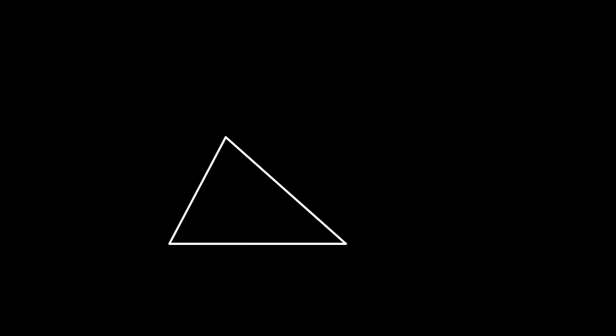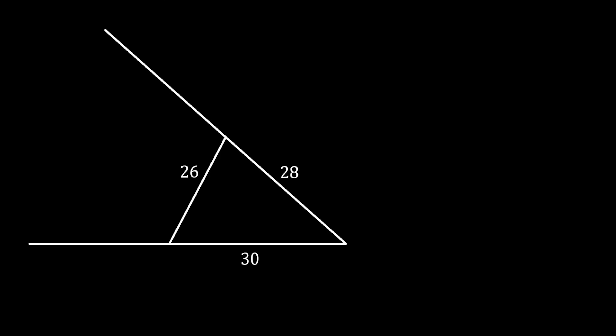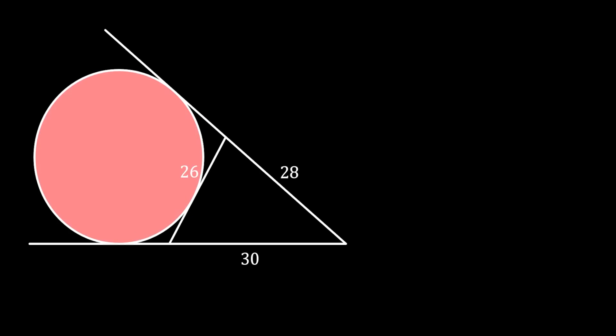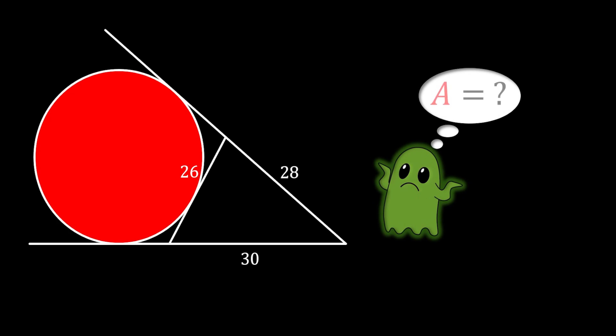We are going to start our problem with a triangle with the sides of 26, 28 and 30. Then we are going to extend two sides of our triangle and construct a circle which touches those two extensions and the third side of our triangle. The question is, can we somehow calculate the area of this circle?